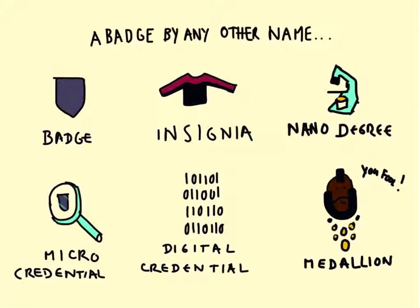One of the problems I've run into in higher education, but also in talking to people who work in corporate training, is that people get quite fussy about the name. These are some of the different names that I've seen for badges — we can't call them badges, it's too infantile, too schoolish. So I've heard them called insignia, which is a bit Star Trek-ish; nanodegrees; micro-credentials; digital credentials; and even medallions. People go to great lengths to change the name. But I think that by any other name, they are still basically badges.